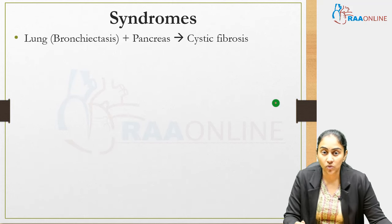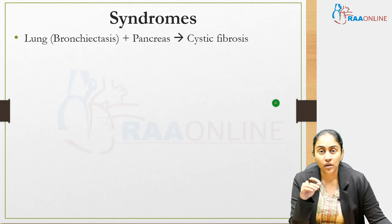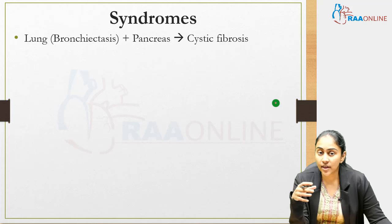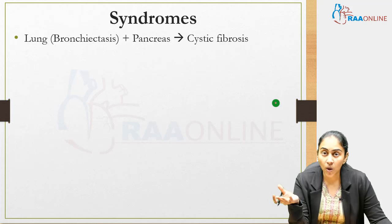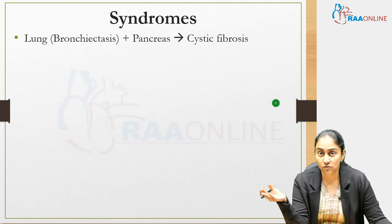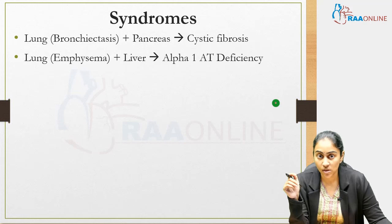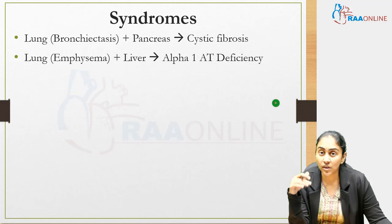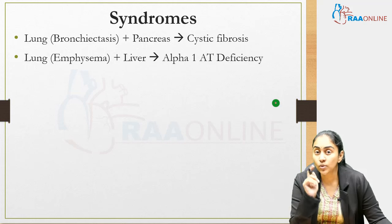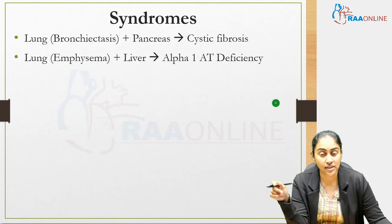Looking at a few clinical syndromes: when a case describes lung involvement plus pancreatic involvement — such as bronchiectasis with features of pancreatic insufficiency — think cystic fibrosis. When there is lung involvement in the form of emphysema plus liver involvement, think alpha-1 antitrypsin deficiency. These patients usually have panacinar emphysema.